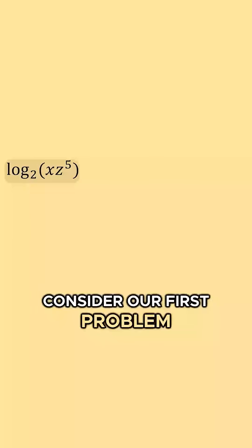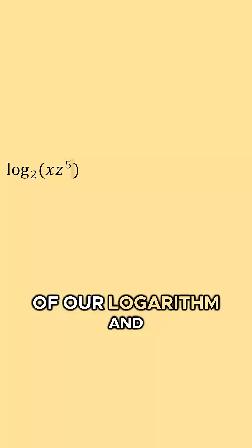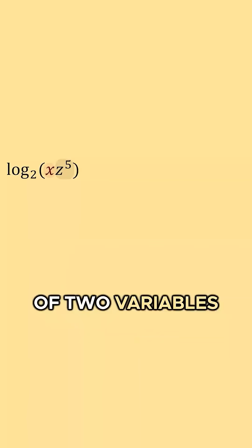Consider our first problem: log base 2 of x times z to the fifth power. We scan the inside of our logarithm and I see the product of two variables, so we may be using the product rule.